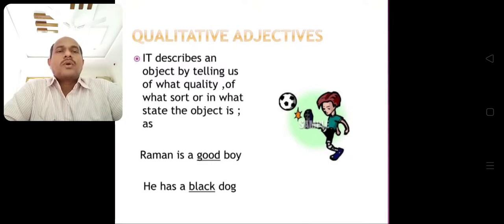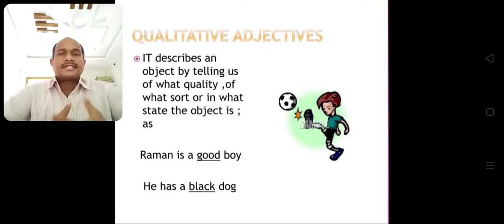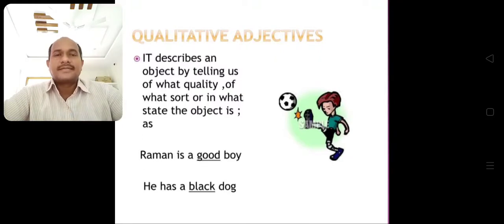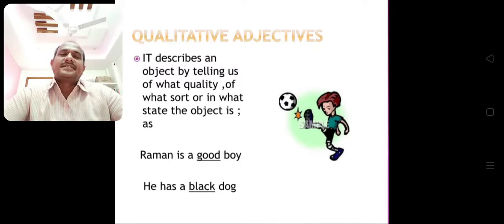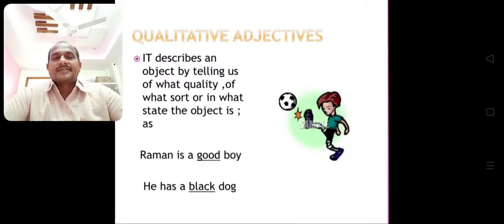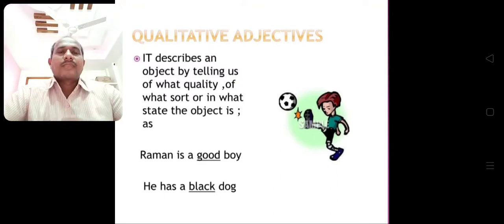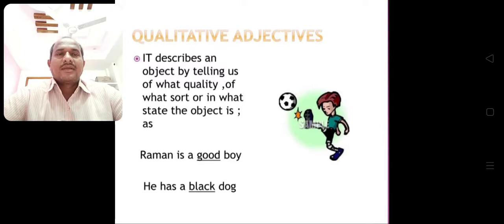The first kind is qualitative adjectives. A qualitative adjective describes an object by telling us of what kind, what quality, what sort, or in what state the object is. For example, 'Raman is a good boy' — here 'good' is the quality. 'He has a black dog' — it shows color.